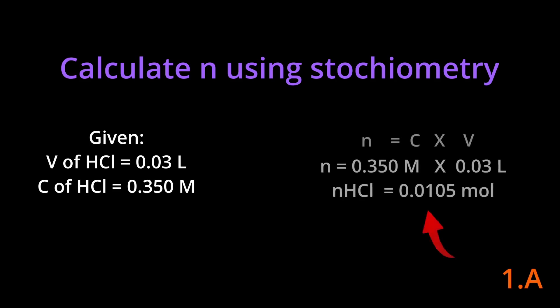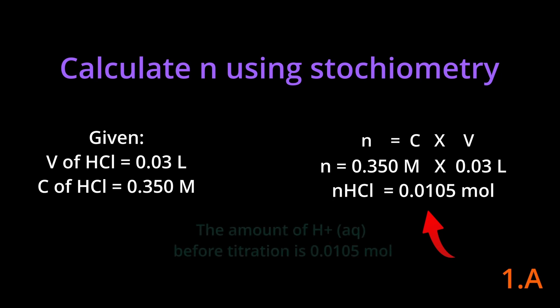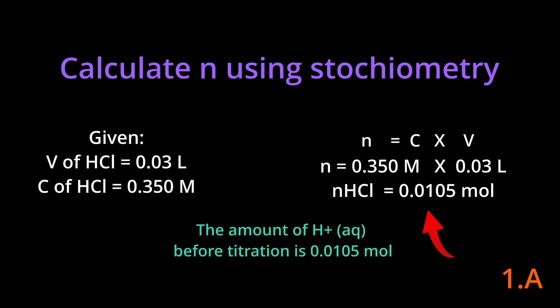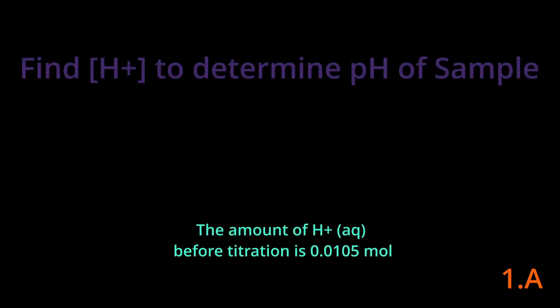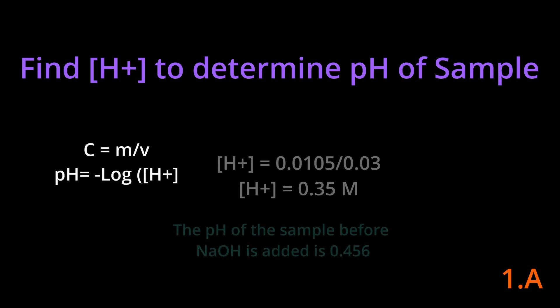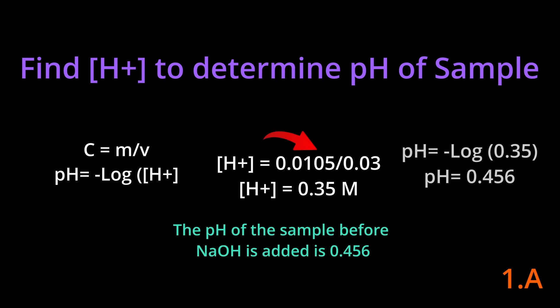Using what you're given, you multiply the volume of hydrochloric acid by its concentration and you get 0.0105 moles. Because of the one-to-one ratio between hydrochloric acid and hydronium in its dissociation, 0.0105 moles is our answer — that's the amount of hydronium. For the pH, you convert this molar value into a concentration by dividing the amount of moles by the total volume: 0.0105 divided by 0.03 liters gives you 0.35. Then pH equals negative log of the hydronium concentration, so negative log of 0.35 gives you a pH of 0.456, and that's our final answer.